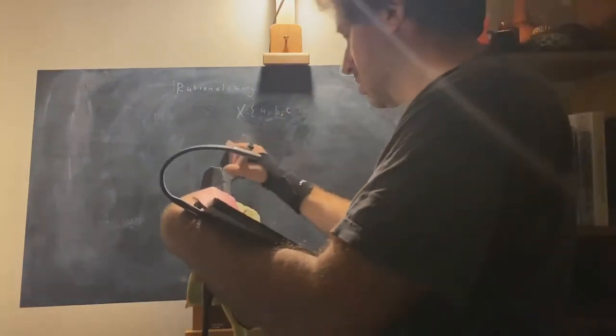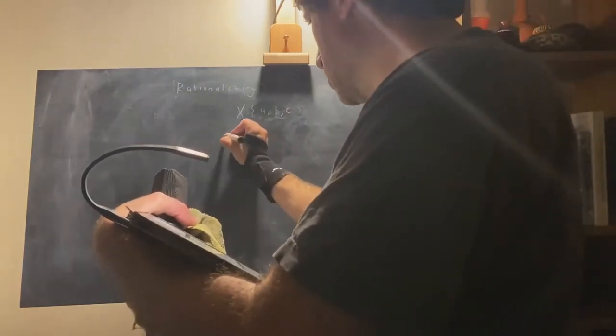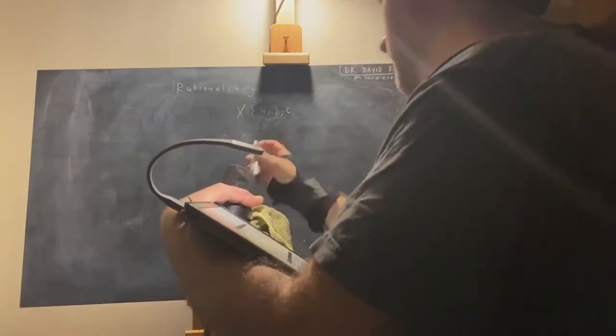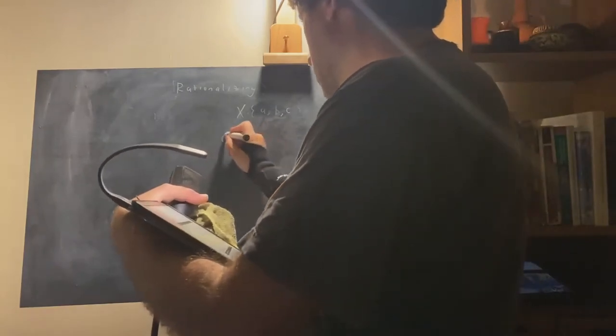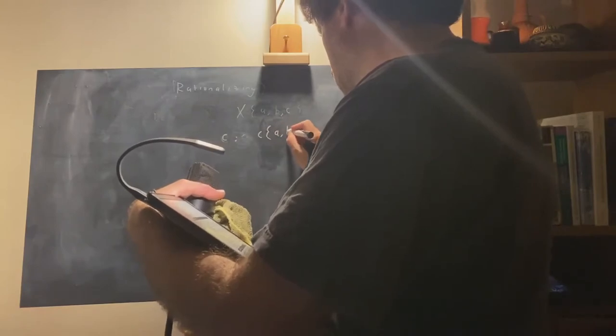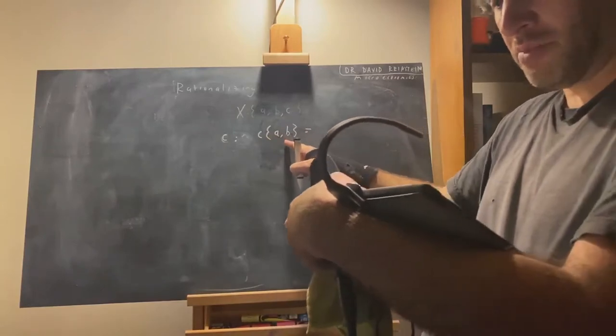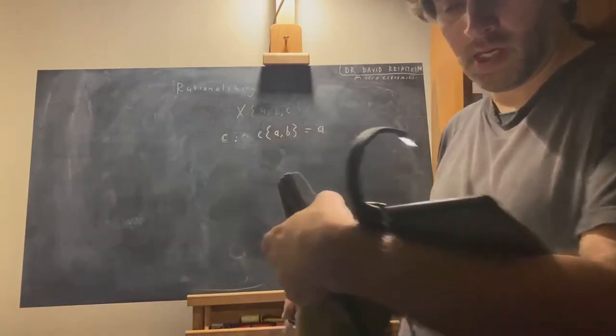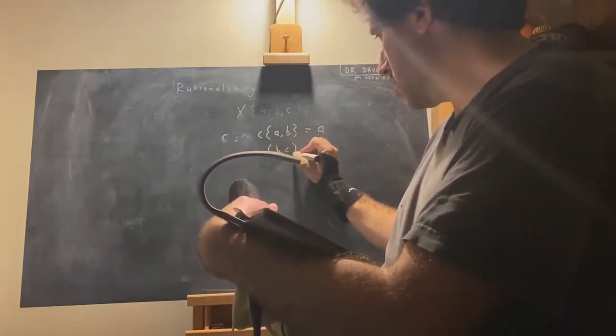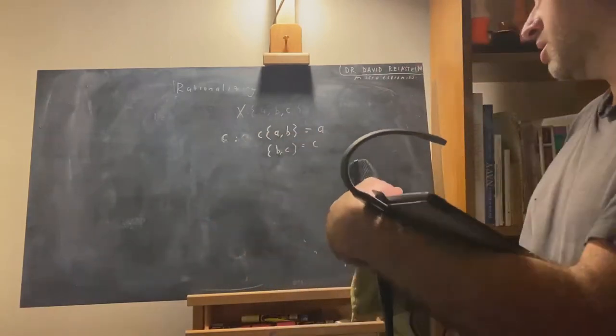So, for instance, we could consider the choice function which we'll call C. It could assign to the choice set of A and B, to B. Maybe it assigns A and maybe to B, C, it assigns C, etc.